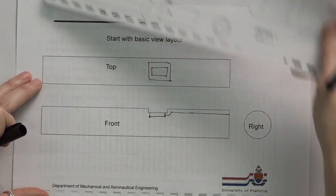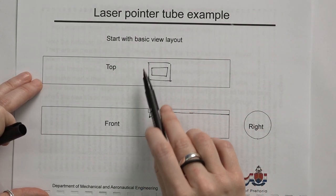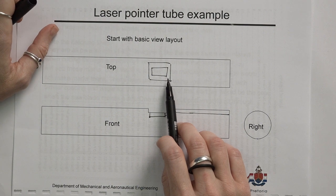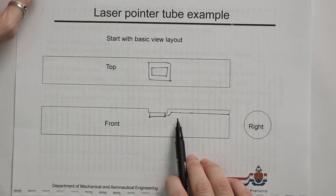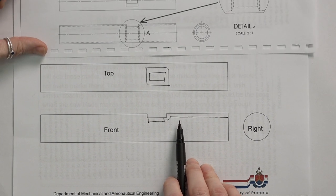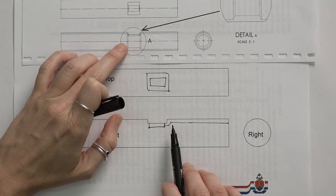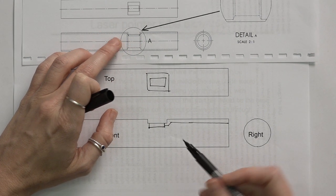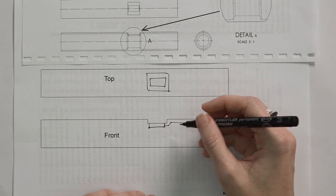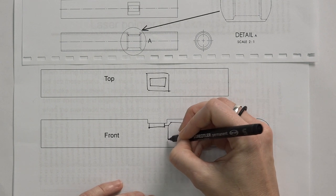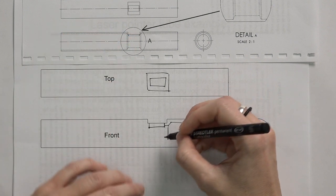If you look at this example where I started to fill in the detail for the top view and the section view, basically what I'm going to do is exactly this shape that I see as hidden detail now is not hidden anymore. It actually becomes detail that I see on my drawing. Exactly those lines that I have in there before.